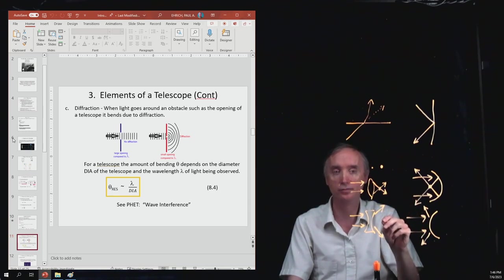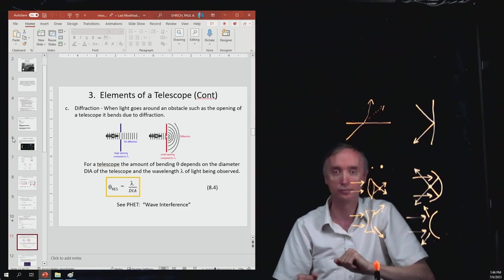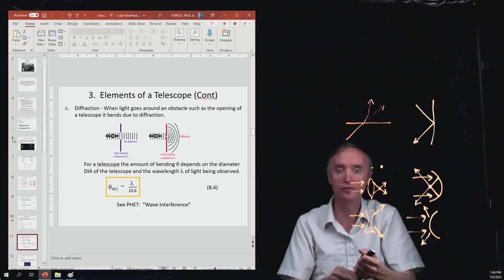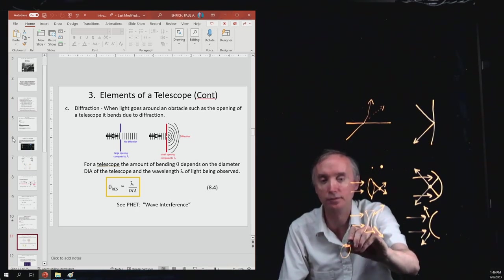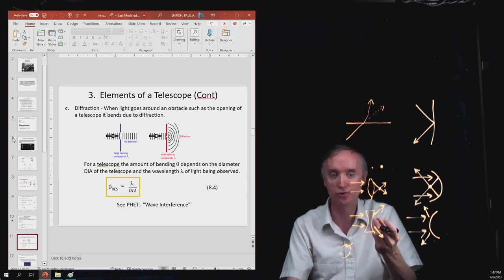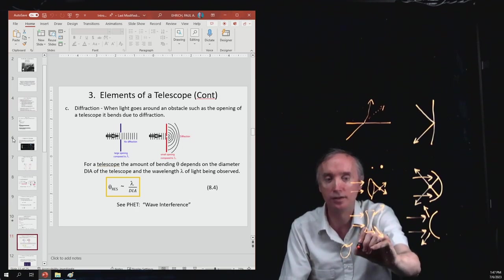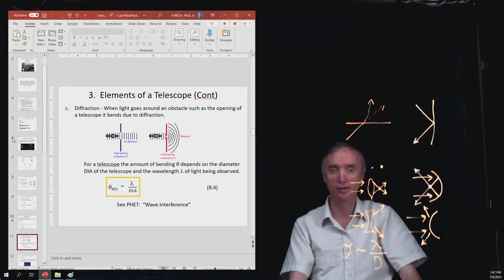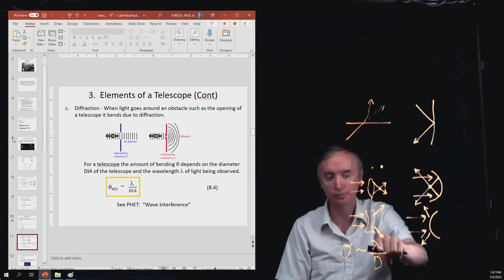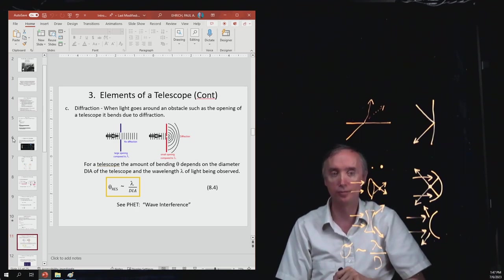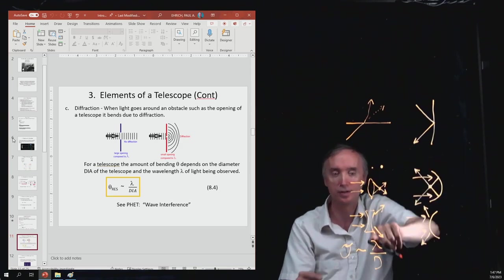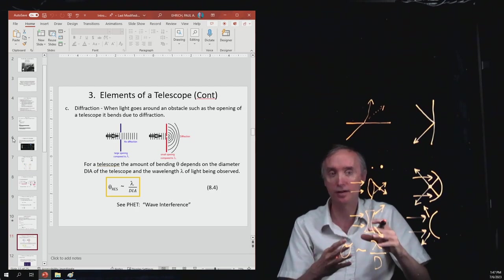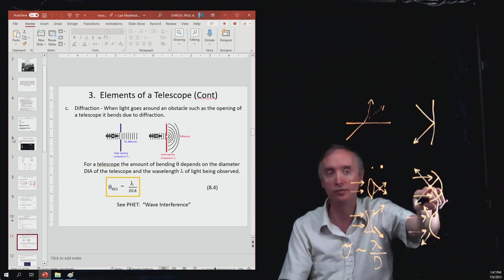Diffraction depends on two things: the wavelength of the light that you're using and the size of the opening of your telescope. You want the diffraction to be as small as possible. The diffraction, the amount that the light is bending, is given by theta. It's the resolution of the telescope. You can see that it is proportional to the wavelength of the light you're using divided by the diameter of the telescope that you're using. The diameter is in the bottom part of the formula. So that bigger telescope means the diameter is bigger, which means the angle is smaller. That's good. That means the light is not going to be diffracted as much so it arrives at the focus like it's supposed to.